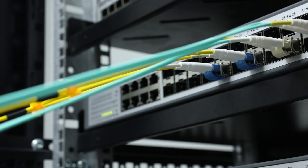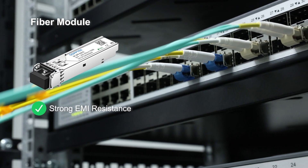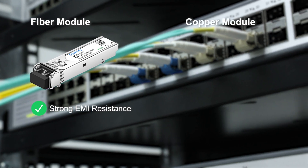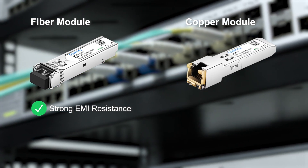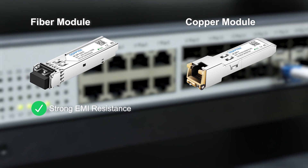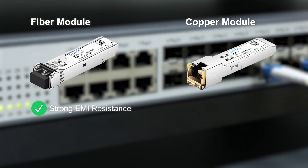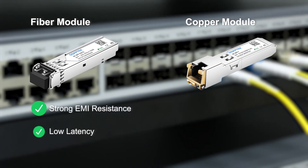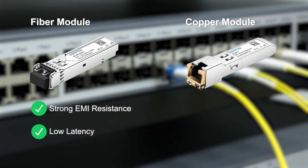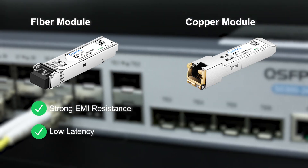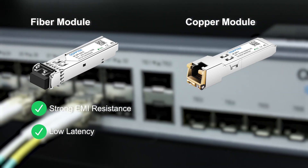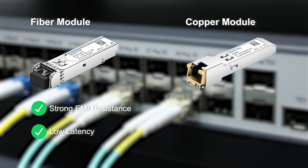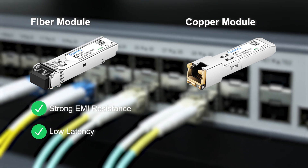In use, fiber modules are more resistant to interference than copper modules, because copper modules are susceptible to electromagnetic interference, such as packet loss near motors. Moreover, fiber modules have lower transmission latency, as light signals travel closer to the speed of light, making them suitable for latency-sensitive applications like high-frequency trading or real-time video streaming.